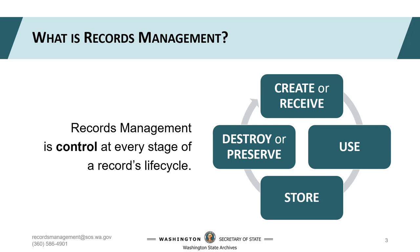A record is active when it's supporting your current work in the use stage. You might share active records over email or edit them as a team in a shared folder. For those records to be useful to your agency, they need to be organized for accessibility. A records inventory is an excellent tool to identify what already exists, where it's stored, and how long it needs to be kept. While in the use stage, you'll want to explore adopting tools to simplify the organization of and access to your records.